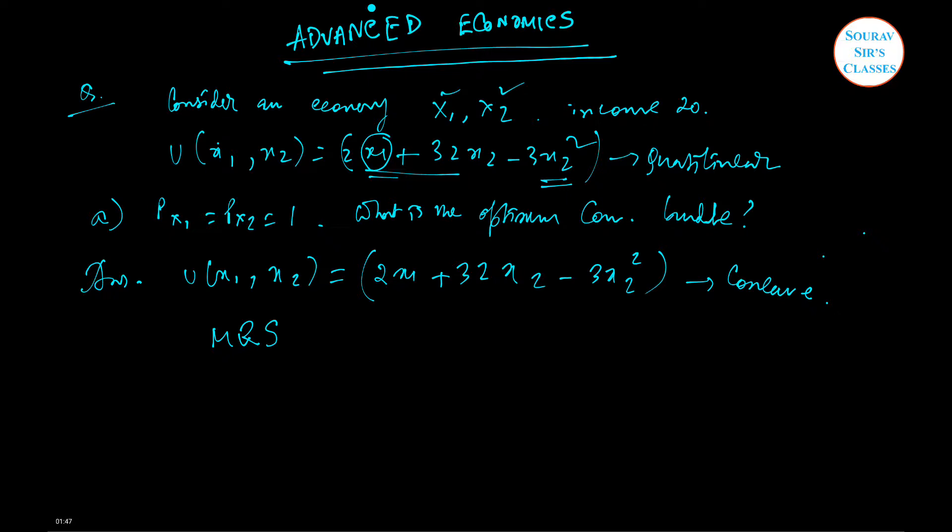Coming to MRS, which is nothing but mu x1 by mu x2, because for optimal consumption bundle MRS has to be calculated. If you partially differentiate, this will give you 2 only. If you have problems in partial derivatives, check our partial derivative video on YouTube.